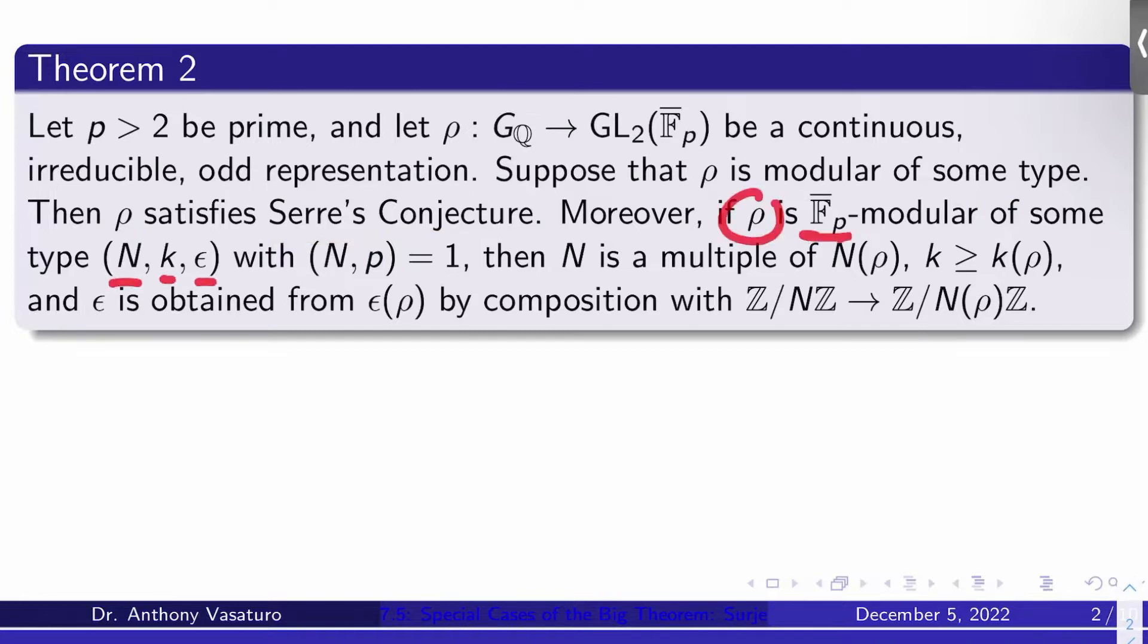Moreover, if rho is Fp bar modular of some type (N, k, epsilon) and (N, p) are co-prime, then N is a multiple of Serre's n, k is at least Serre's k, and epsilon is obtained from Serre's epsilon by composition with the natural map from Z mod NZ to Z mod n of rho Z.